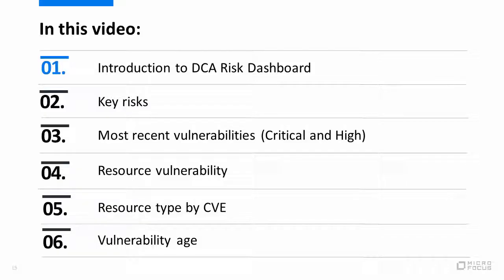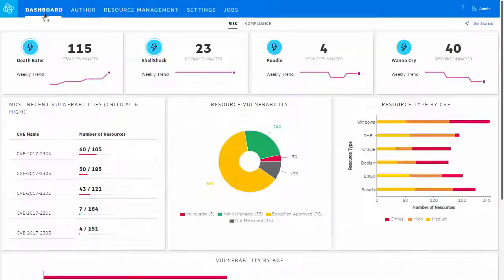In this video, we will introduce the DCA Risk Dashboard followed by a brief overview of various graphs on it like Key Risks, Most Recent Vulnerabilities, Resource Vulnerability, Resource Type by CVE, and Vulnerability Age.